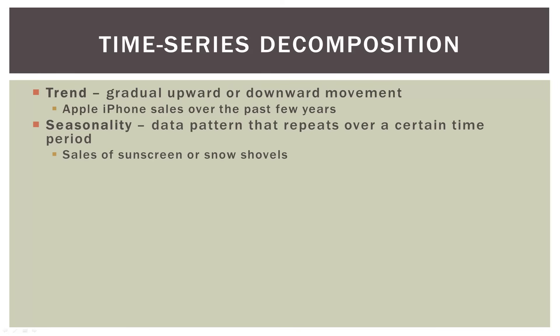Seasonality. That's a data pattern that repeats over a certain time period. So if you think of a product like sunscreen, they're going to sell more sunscreen in the spring and summer. Or the opposite is snow shovels — more snow shovels are going to be sold in the fall and winter. And that's definitely a seasonal data pattern in terms of those two products.